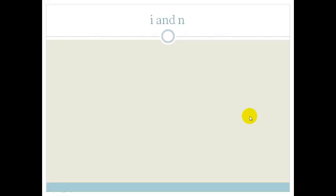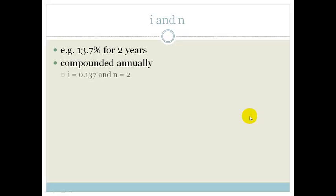But you could have something different. So let's talk about the different scenarios you could have. If, for example, I tell you you've got 13.7% interest for two years compounded annually, we do exactly what we've just been doing. Our i is 0.137, and the N is 2. No problem. That's what we've been doing so far.